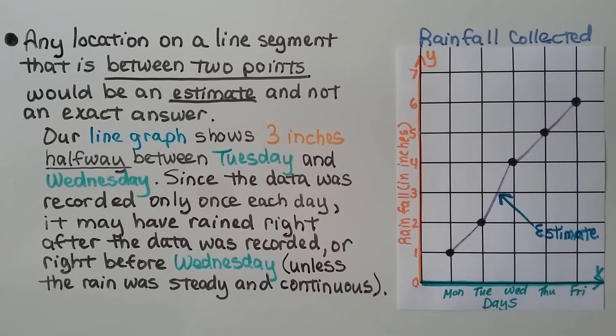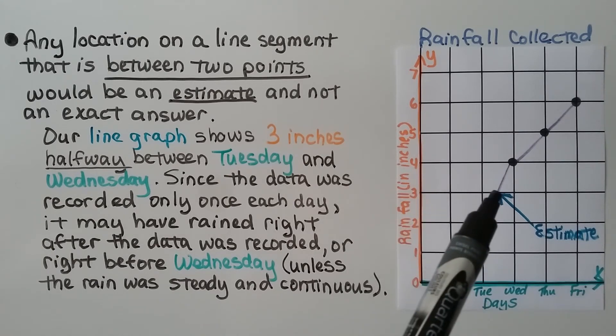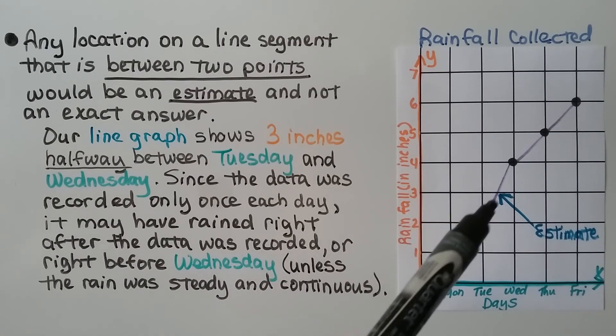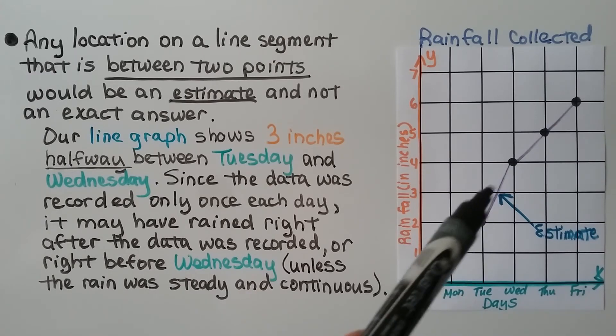Any location on a line segment that is between two points would be an estimate and not an exact answer. Our line graph shows three inches between when it's halfway between Tuesday and Wednesday. And since the data was recorded only once each day, it may have rained right after the data was recorded or right before Wednesday, unless the rain was steady and continuous. So this place right here on this line segment, that would be an estimate.